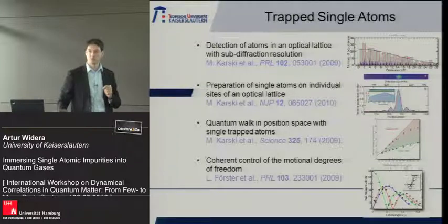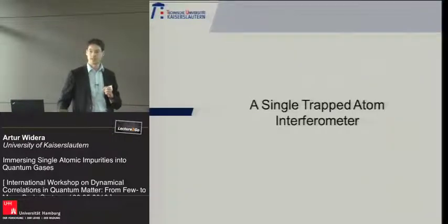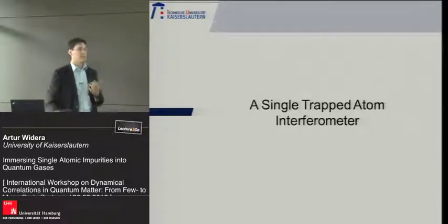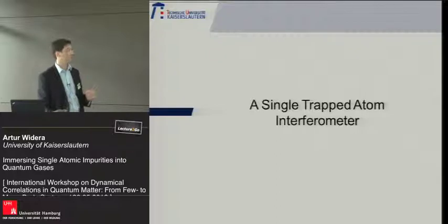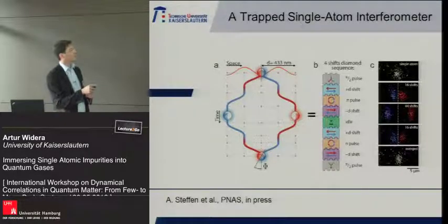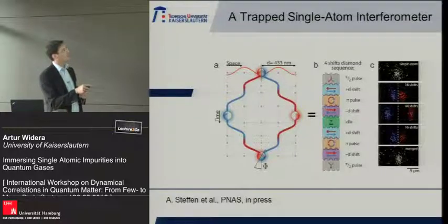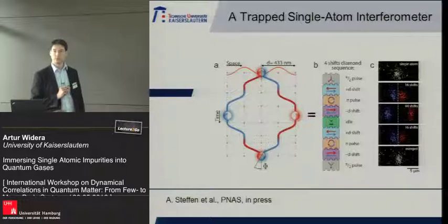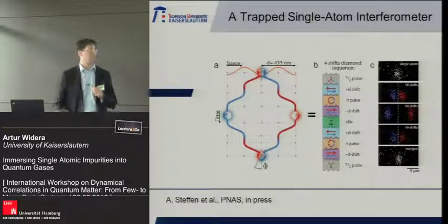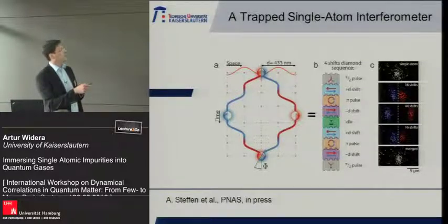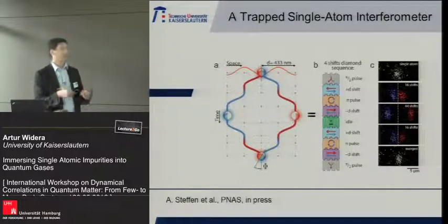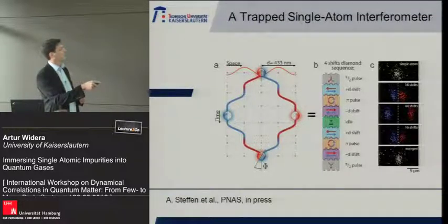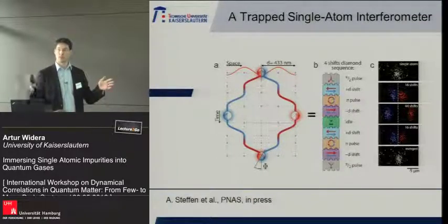I want to show one example of recent results on a single-trapped atom interferometer, to show that this can be useful for exploring quantum effects close to surfaces. We have single atoms trapped at sites of an optical lattice, with internal degrees of freedom encoded as red and blue. We prepare the atom in a coherent superposition of two internal states, then entangle this internal degree of freedom with position, delocalizing the atom so that the blue spin state is to the left and the red spin state is to the right — a quantum superposition.